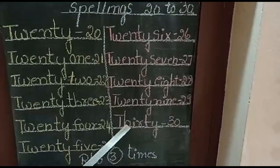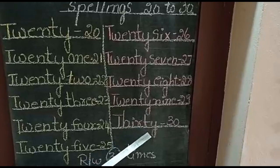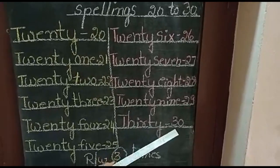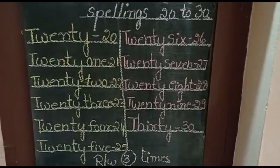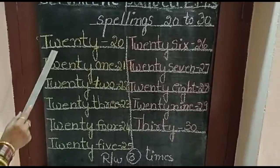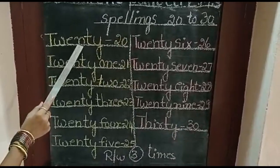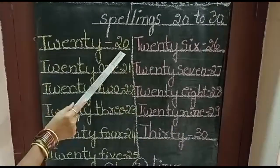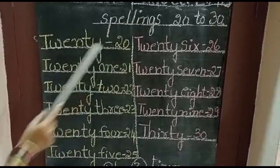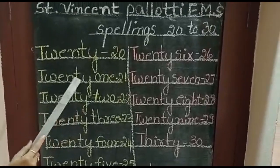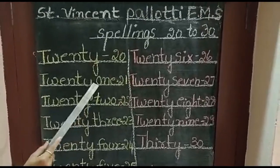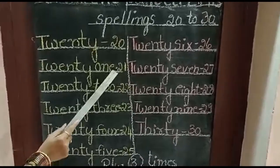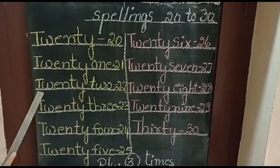T-H-I-R-T-Y, 30. One second, children. T-W-E-N-T-Y, 20. T-W-E-N-T-Y O-N-E, 21.